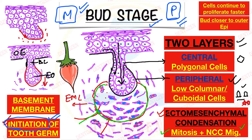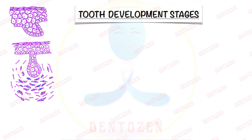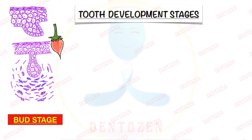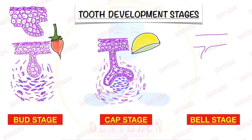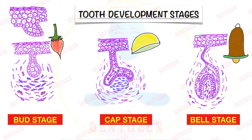So that is the bud stage. Now this enamel organ — the bud-shaped enamel organ — the cells will keep on dividing and its shape will change. As the shape of this enamel organ changes, it will change from bud shape in bud stage to cap shape in cap stage, and then finally to bell shape in bell stage. We also note that the number of layers in the enamel organ changes — in bud stage we have two layers, central and peripheral, and as it moves to cap stage and bell stage, the layers also change.